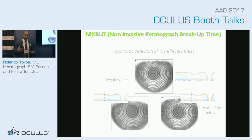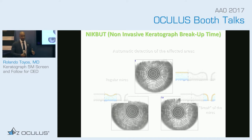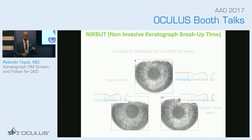If you get a measurement of like three on your non-invasive tear breakup time, it's really about a five or six on fluorescein. But the more important aspect is that it gives you something you can follow — so as the patient is getting better, that non-invasive tear breakup time should be getting better. Don't get so hung up on the number; get hung up on whether it's abnormal and whether the patient is getting better as you do the treatment.